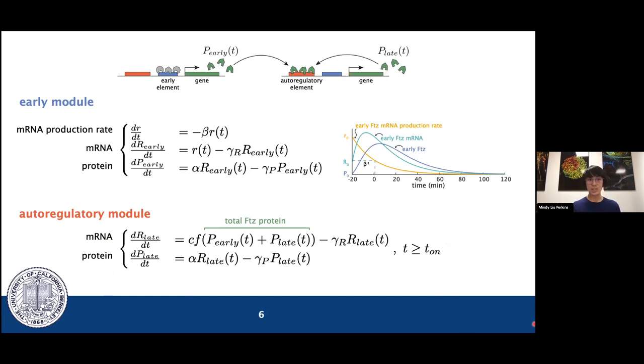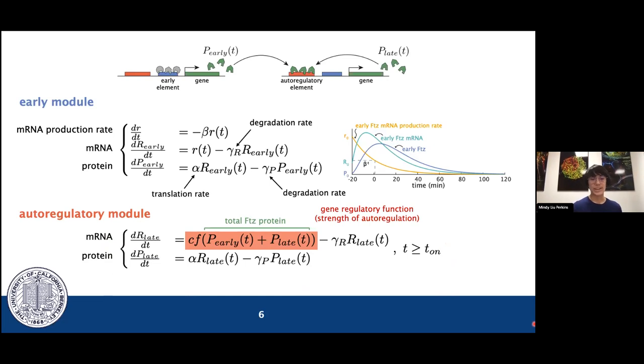We used data from the literature as well as our live imaging experiments to quantitate each of the parameters in these models. That would include the mRNA and protein degradation rates, also the translation rate. Perhaps most importantly for us, we were able to characterize this gene regulatory function that describes how strongly FUTs protein activates its own expression. I'm going to note here that we measured these parameters by averaging across nuclei in a set of seven embryos. For all subsequent analysis I will show you, we used a separate set of three embryos to reduce any bias.